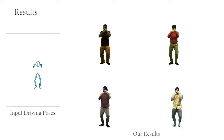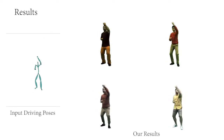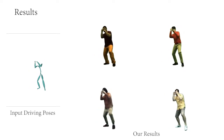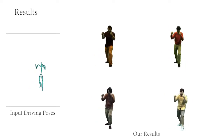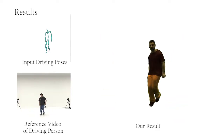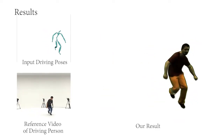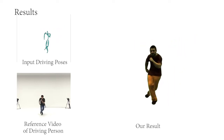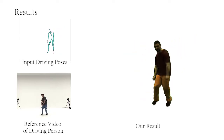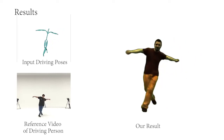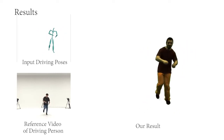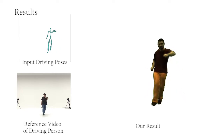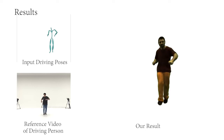Here we show a result of driving different people with the same poses. We can see the pose-dependent deformations and textures in each result. Here we use the challenging dancing motion from the AIST dataset as driving poses. Even though these poses are very different from the training poses, our method produces visually plausible results. The body parts are well preserved and the dynamic deformations and appearance are properly synthesized.